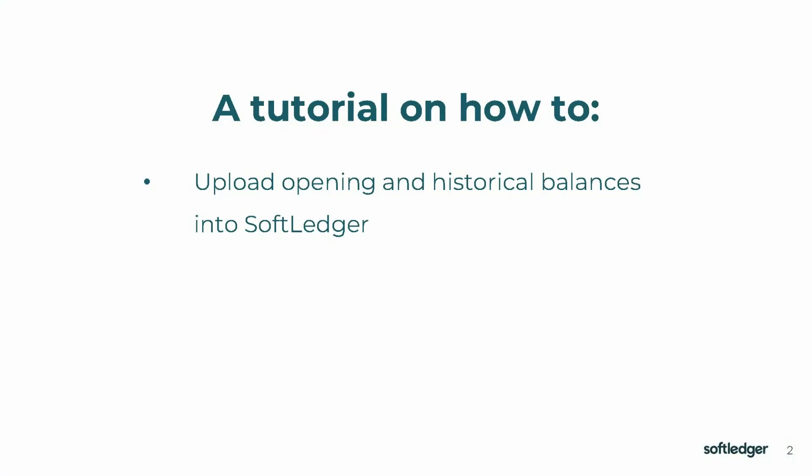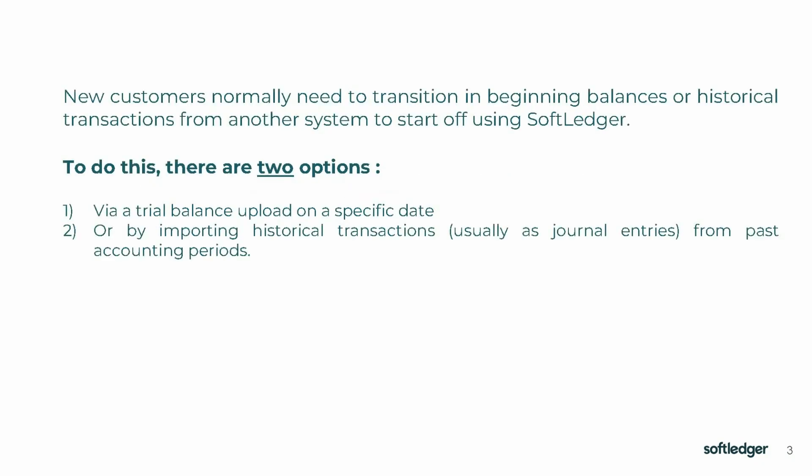This is a Soft Ledger tutorial on how to upload opening and historical balances into Soft Ledger. New customers normally need to transition in beginning balances or historical transactions from another system to start using Soft Ledger. To do this there are two options: one, via a trial balance upload on a specific date, or two, by importing historical transactions usually as journal entries from past accounting periods. Let's work through examples demonstrating these two options.